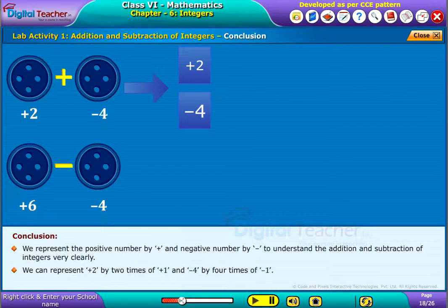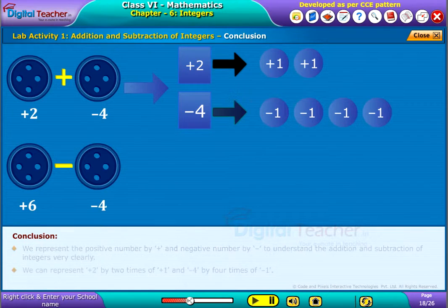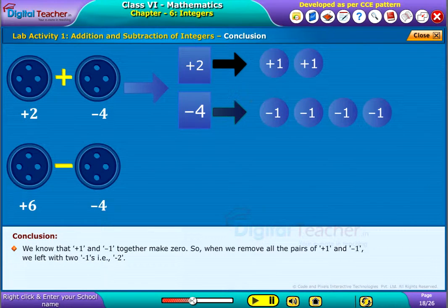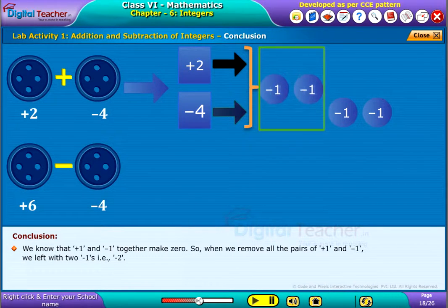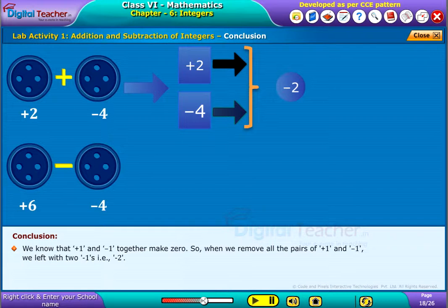We can represent plus 2 by 2 times of plus 1 and minus 4 by 4 times of minus 1. We know that plus 1 and minus 1 together make 0. So when we remove all the pairs of plus 1 and minus 1 we left with 2 minus 1 that is minus 2.